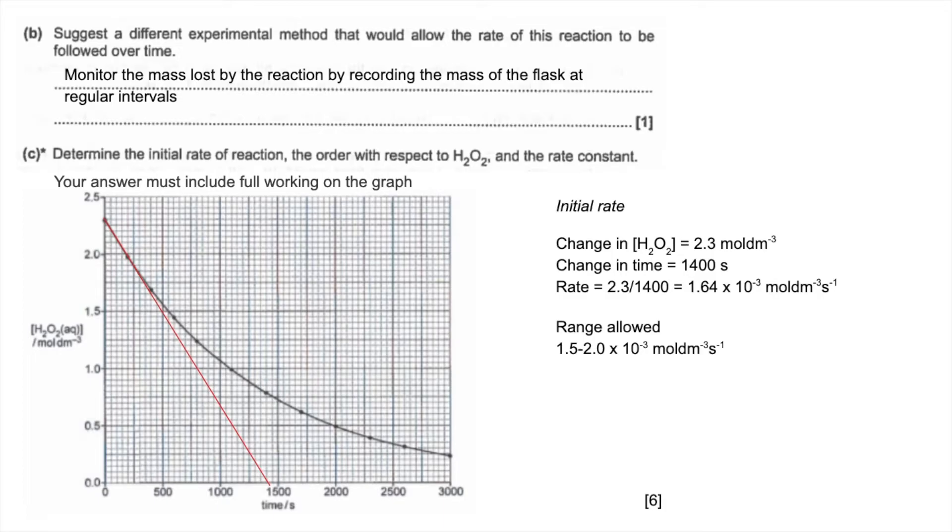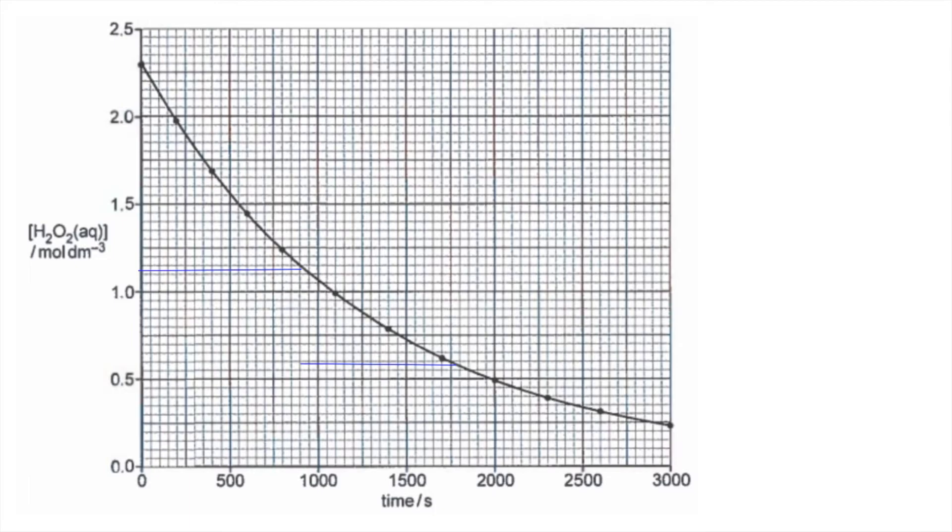The next part of the question I'm going to do on another slide. So there's the same graph. You'll notice those two blue lines I've drawn there, they are the first two half-lives. To get the order with respect to hydrogen peroxide, we're going to look at how the half-lives compare. The first half-life from 2.3 down to 1.15 has taken about 900 seconds.